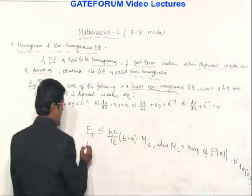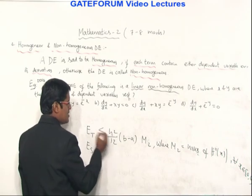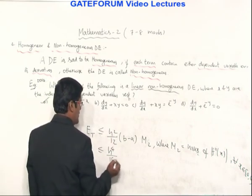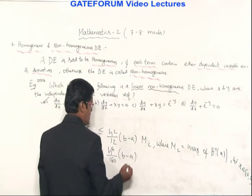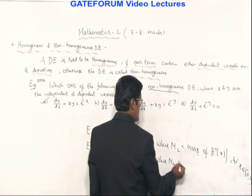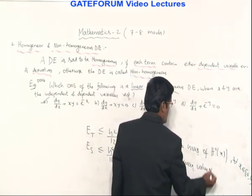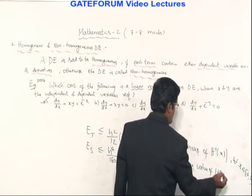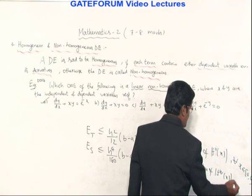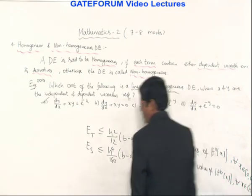Similarly, the error in Simpson's rule is: E_S ≤ (h⁴ / 180) × (b − a) × M₄, where M₄ = max|f⁽⁴⁾(x)| for all x in the closed interval [a, b].